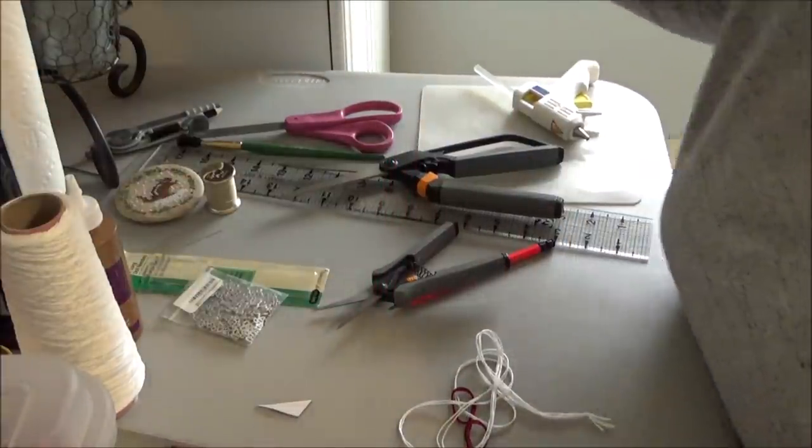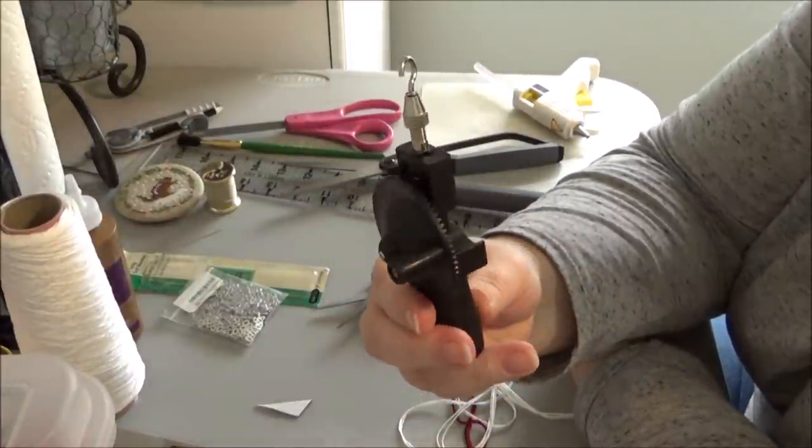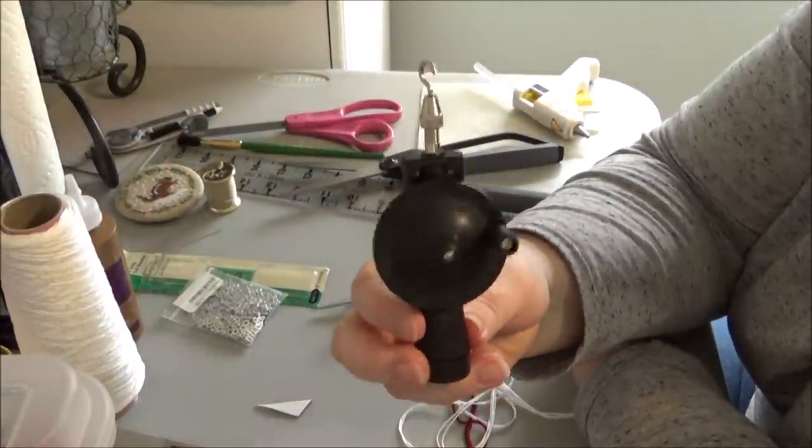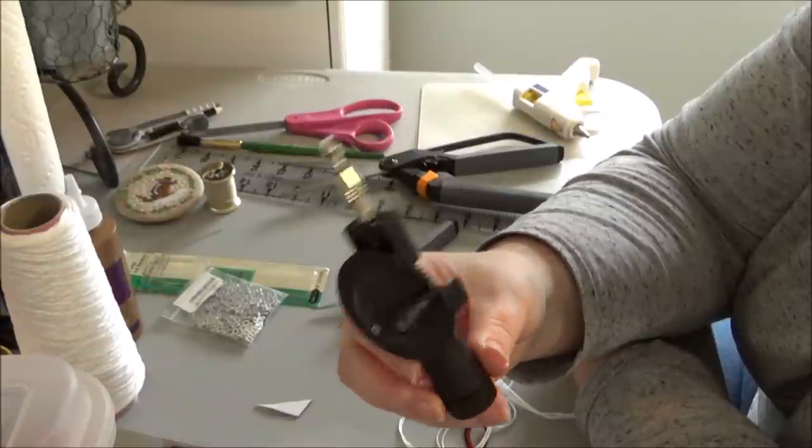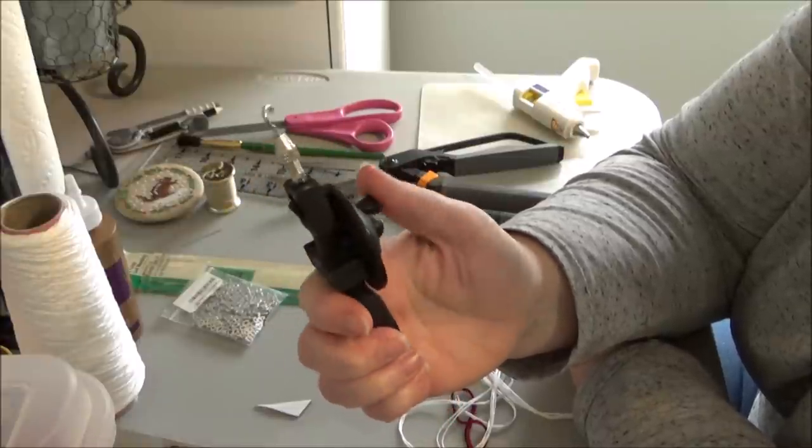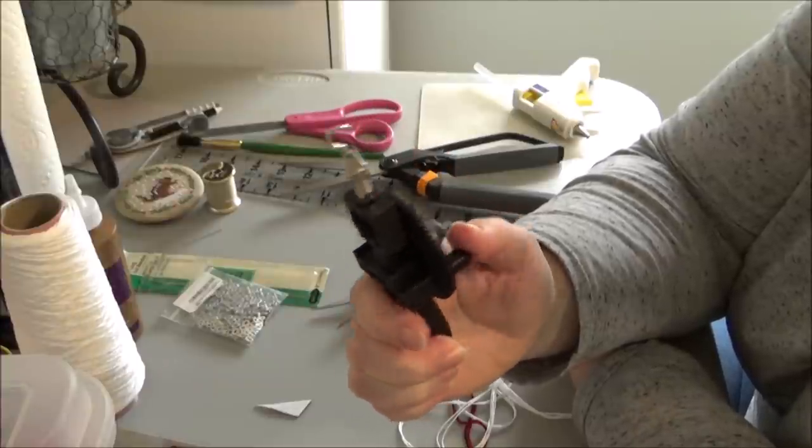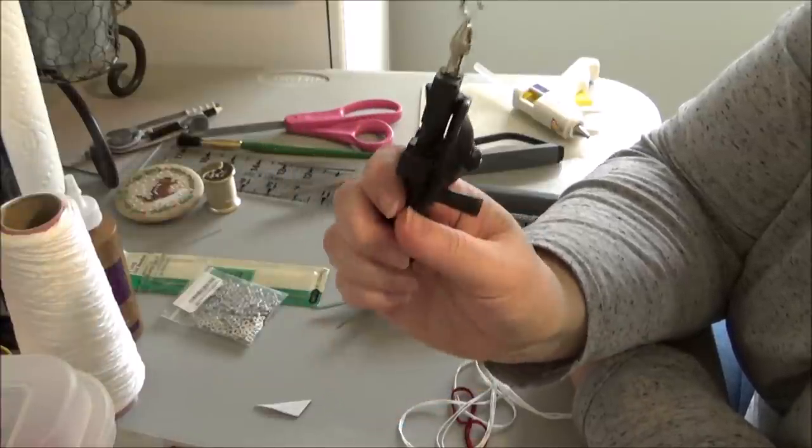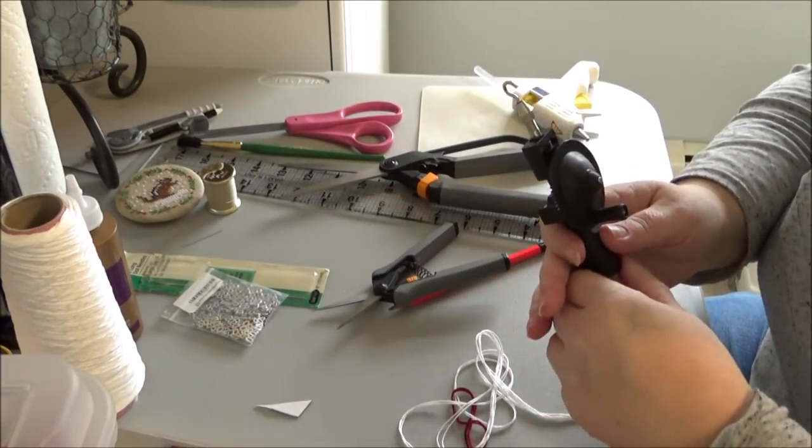To make the cording, we use the Kreinich cord maker. Some L&S stores carry this. Amazon carries this. Kreinich carries this. It also can be used to make fishing lure. I saw when I looked on their website a while ago. So I'm going to call my husband in to help video this next part because it's a little hard to see right here. So hold on.